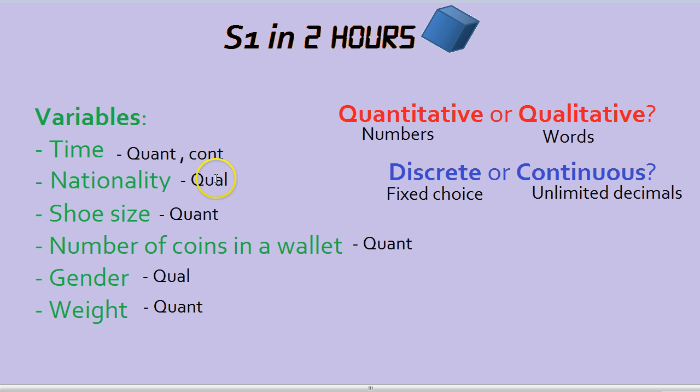Nationality is a qualitative variable, so it's discrete. You only have a limited number of choices.